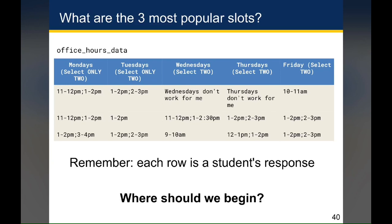So with that caveat out of the way, let's take a look at office hours data, which is a data frame that I've pulled in from the Google Forms. What I'm showing you here is a data frame that has five columns where each of the columns represents a day, and multiple rows where each row represents a single student's response. There's 35 responses, and so the question for you is where should we even begin to try to answer this question of what the three most popular slots are?